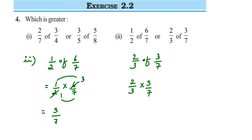The second number: 2/3 × 3/7. We can cancel 3 and 3. Multiplying: numerator 2 × 1 = 2, denominator 1 × 7 = 7. So the second number is 2/7. Both numbers already have 7 in the denominator.